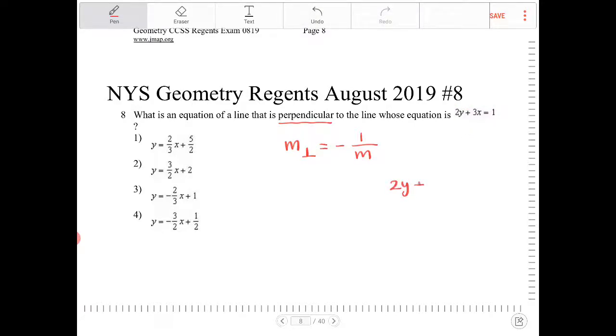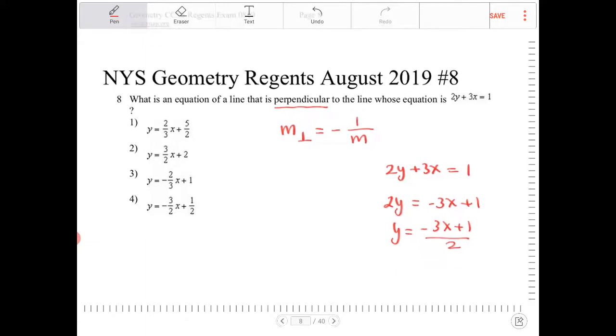I have 2y plus 3x is equal to 1. I want to subtract over 3x and divide by 2. What will become of this is negative 3 halves x plus 1 half.